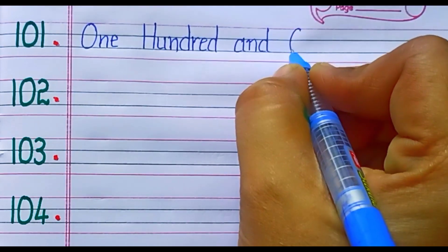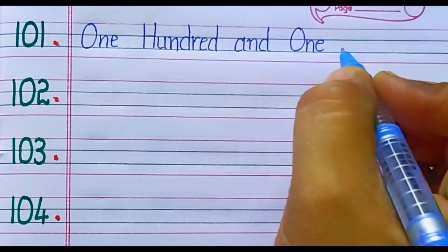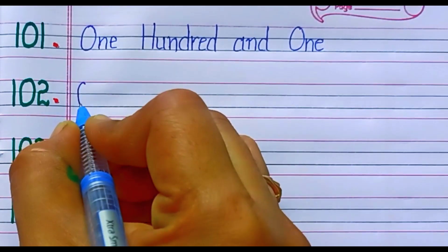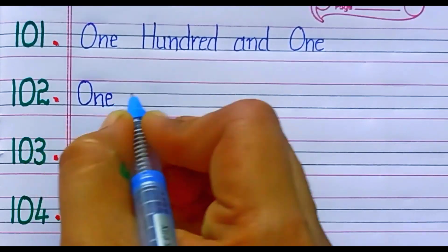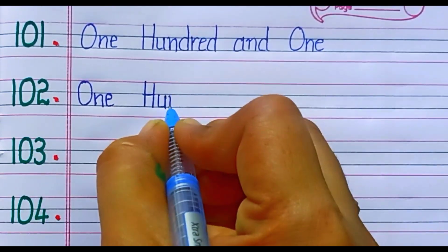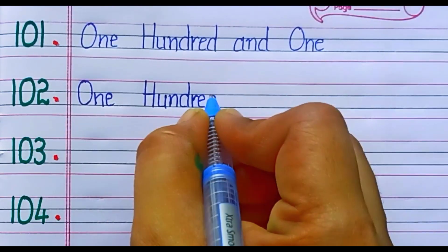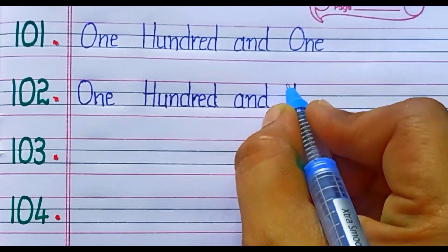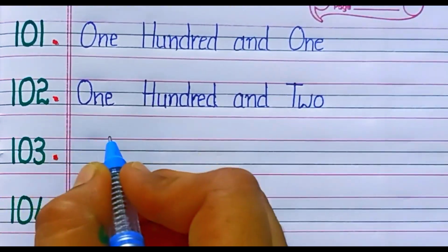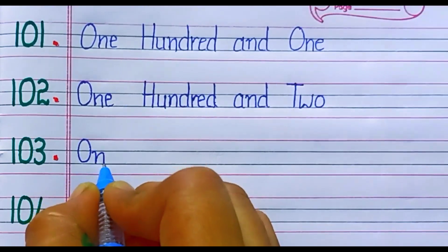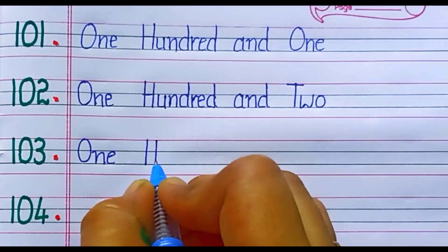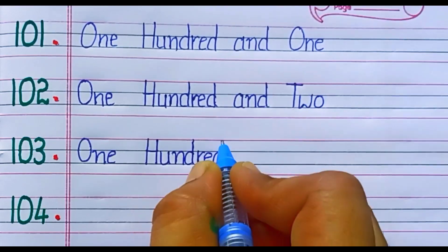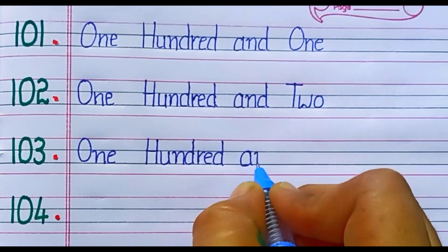101 — O-N-E-1. 102 — T-W-O-2. 103 — T-H-R-E-E-3.